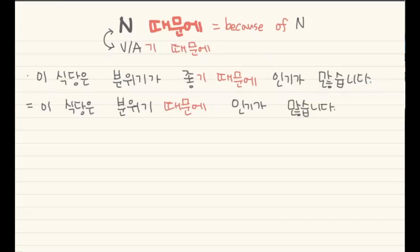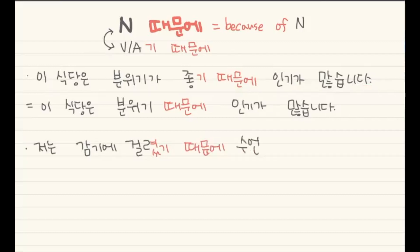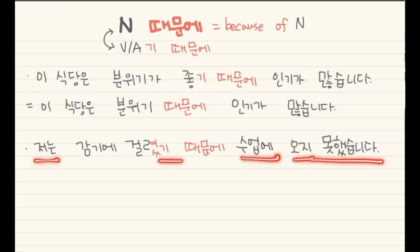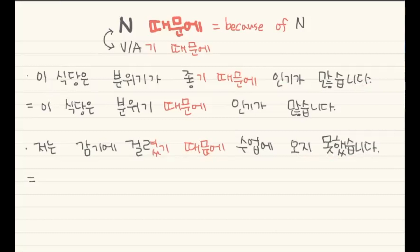You can write it down like this — two sentences, the meaning is totally the same. One more sentence example: 저는 감기에 걸렸기 때문에 수업에 오지 못했습니다. 'I couldn't come to the class because I caught a cold.' Even in English we can say 'I couldn't come to the class because of the cold' — it can be changed like this.